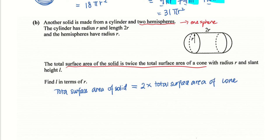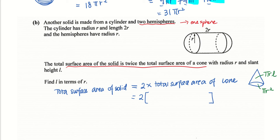The total surface area of a cone is the curved surface area pi r l plus the base area pi r squared. The total surface area of the solid consists of the surface area of a sphere — 4 pi r squared — and the curved surface area of the cylinder. So total surface area of solid is 4 pi r squared plus the curved surface area of the cylinder, which is 2 pi r times the length 2r.